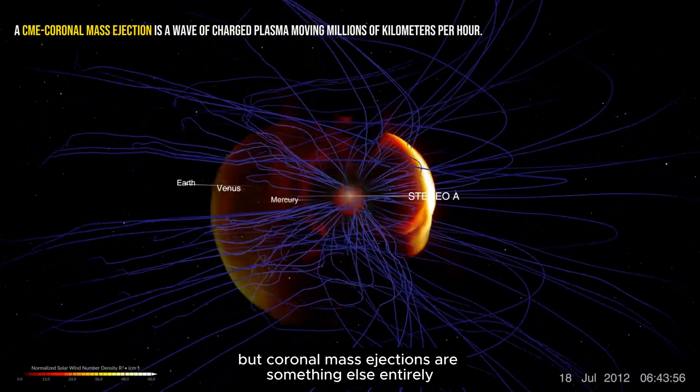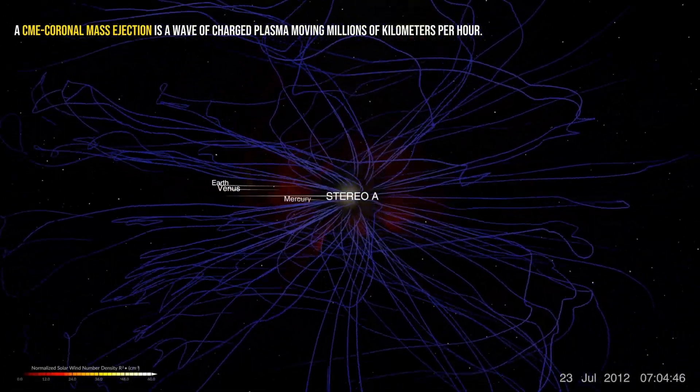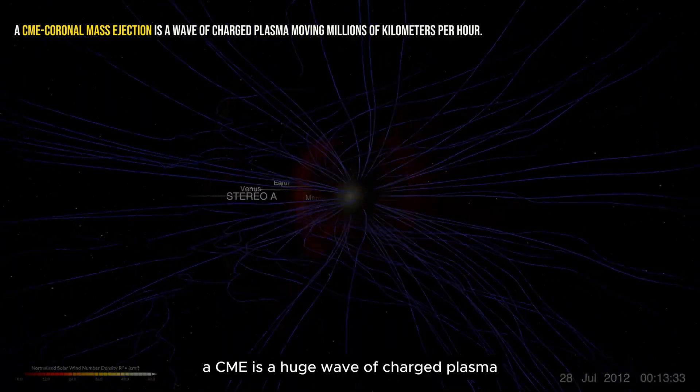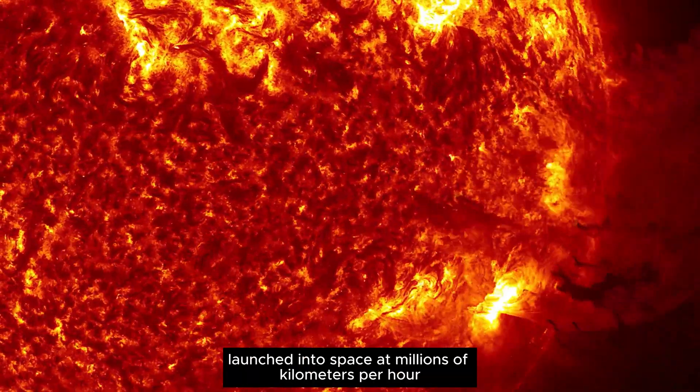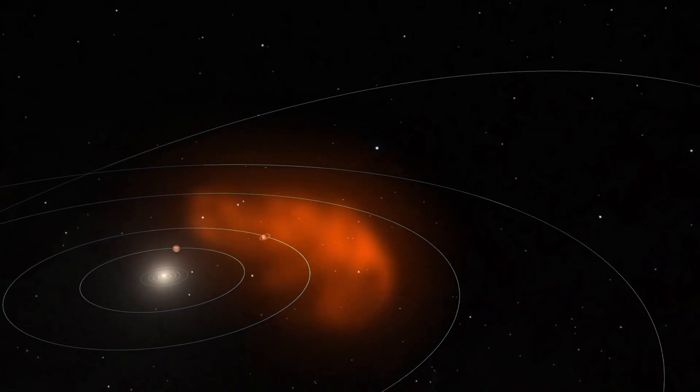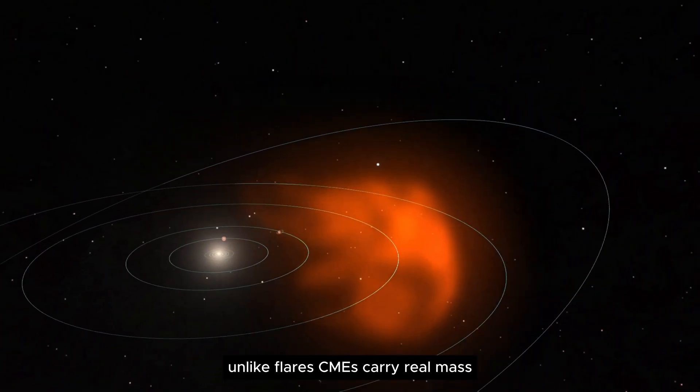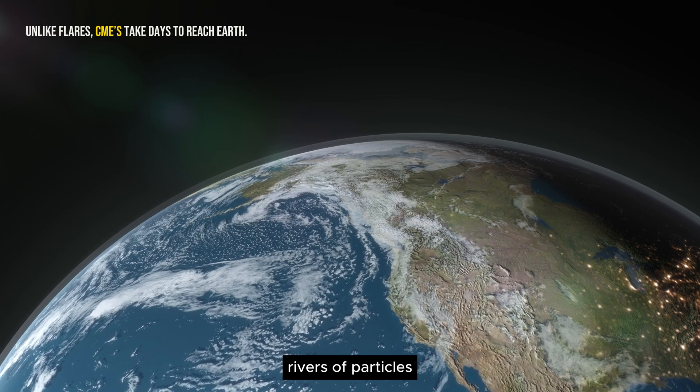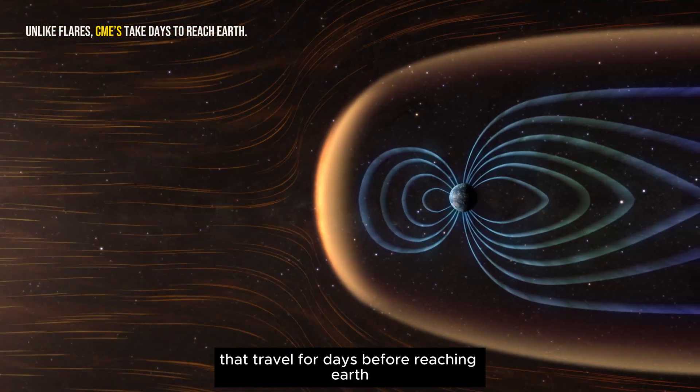But coronal mass ejections are something else entirely. A CME is a huge wave of charged plasma launched into space at millions of kilometers per hour. Unlike flares, CMEs carry real mass, rivers of particles that travel for days before reaching Earth.